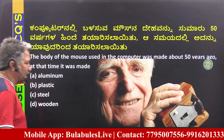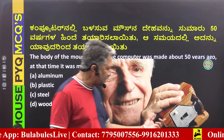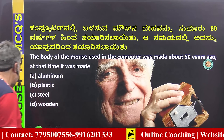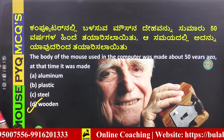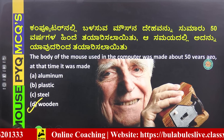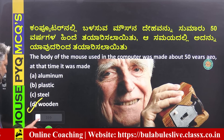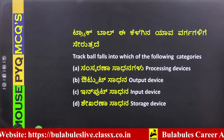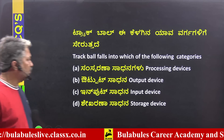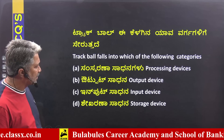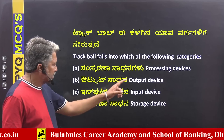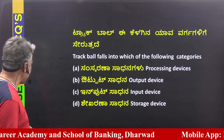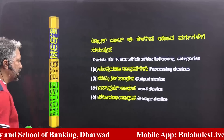The first mouse was made of wood. Later, plastic materials were used. The trackball used to be part of this device. The mouse is categorized as a processing input device — input, output, storage — and the trackball is also classified under input devices.